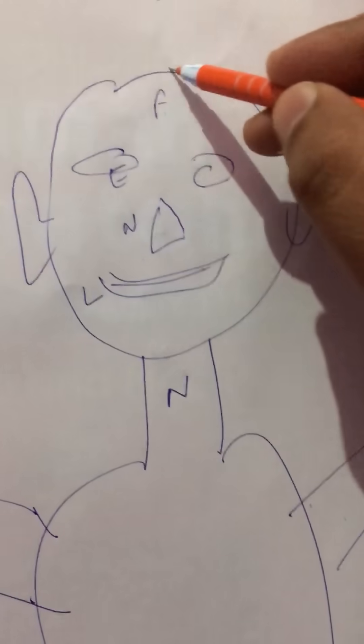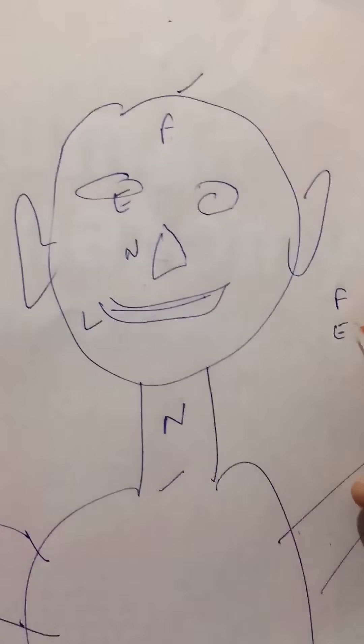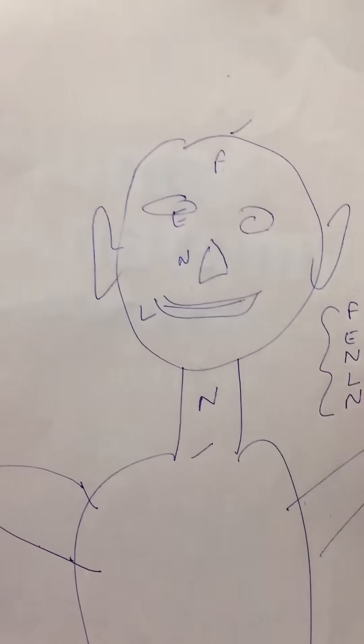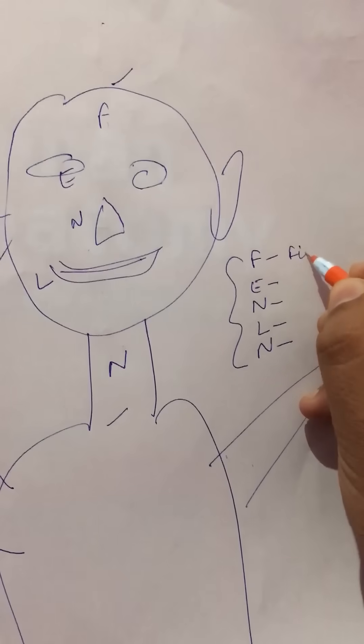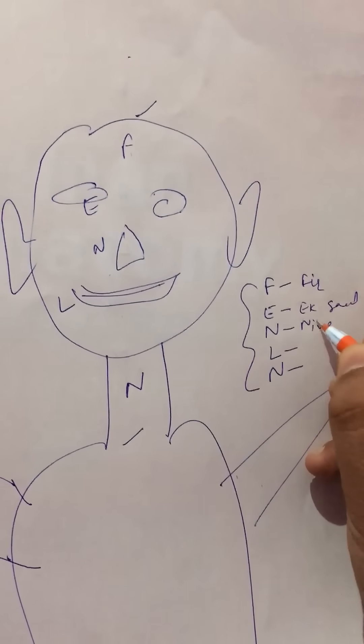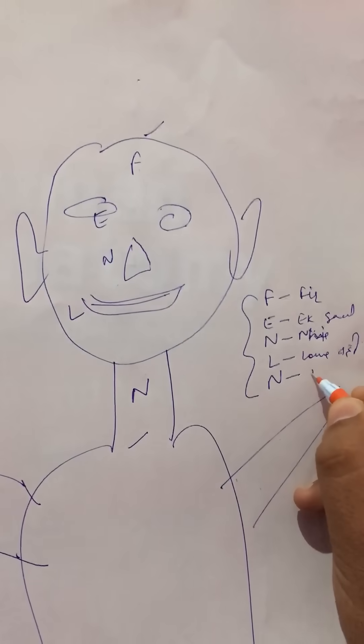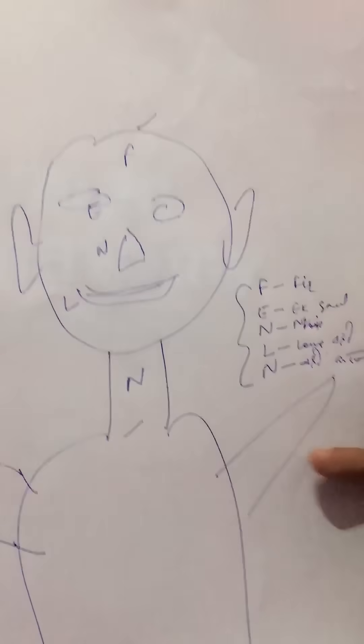If we learn the mnemonics of the structures which are present from the upper border of the head to the lower border of the neck, then we have F E N L N. Here comes a mnemonic.